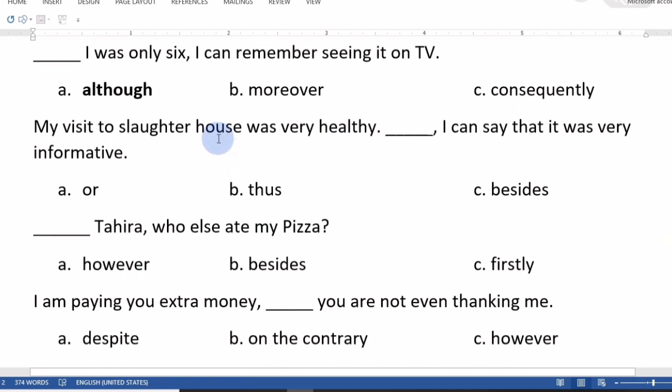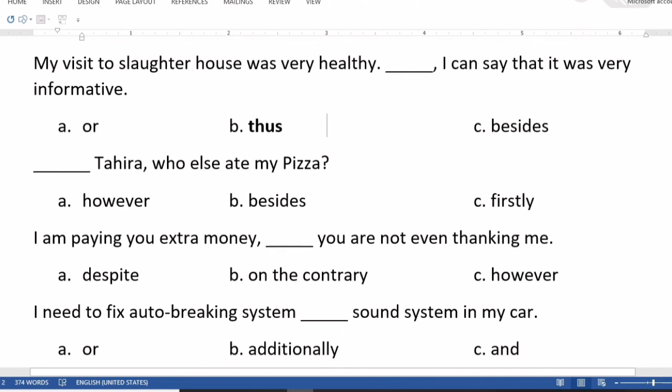My visit to slaughterhouse was very healthy. I can say that it was very informative. The answer is thus. When you use thus, it means at the end you're concluding. For example, I went shopping, bought laptop, headset, table. Thus I can say that my day was very busy. Hence is used in similar places.